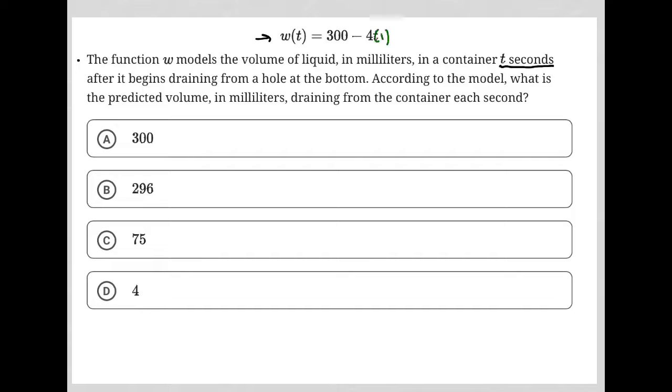Then now we have 300 minus 4. And if it were 2, 300 minus 8. So every second, I have four fewer milliliters in the container.